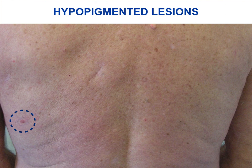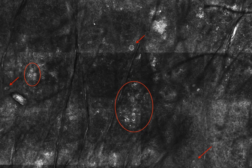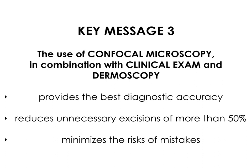Hypopigmented lesions are a frequent dermoscopic challenge. In this case, a lesion with dotted vessels was detectable upon dermoscopy, but a confident diagnosis was very difficult. Confocal microscopy displayed atypical roundish cells in the epidermis forming non-discrete aggregates suggestive of melanoma. In conclusion, the use of confocal microscopy in combination with clinical exam and dermoscopy provides the best diagnostic accuracy, reduces unnecessary excisions by more than 50%, and minimizes the risk of diagnostic mistakes.